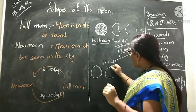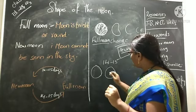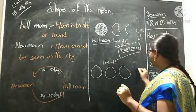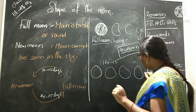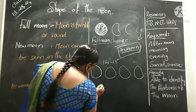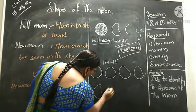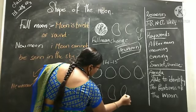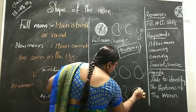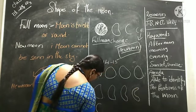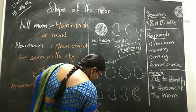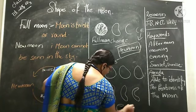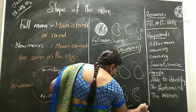From the full moon, after the second day the shape starts to decrease — third day, fourth day, fifth, sixth, seventh, eighth, ninth, tenth, eleventh, twelfth, thirteenth, and fourteenth day it keeps decreasing.